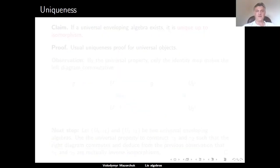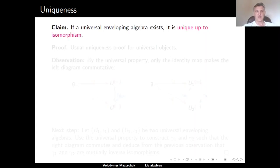As usual, if we have defined something using a universal property, there is no reason for such an object to exist. So now we need to prove that a universal enveloping algebra always exists. However, as is also usual for definitions given by a universal property, objects defined by universal property, if they exist, are unique up to isomorphism. Let us first prove that if a universal enveloping algebra exists, then it is unique up to isomorphism.